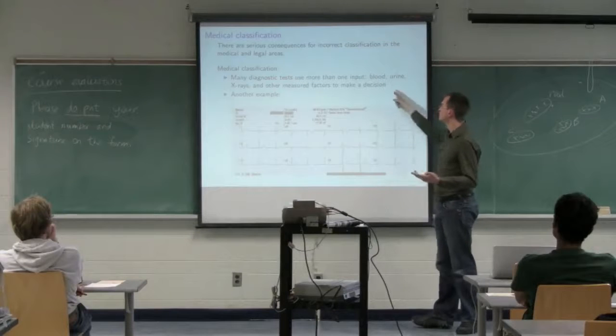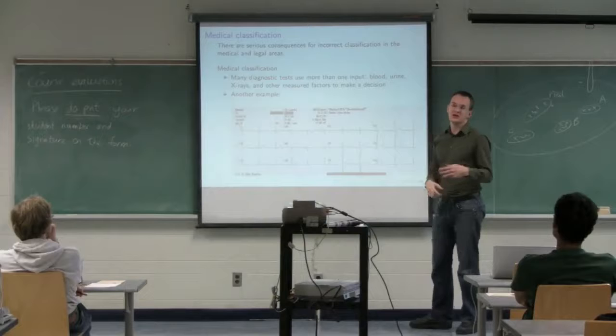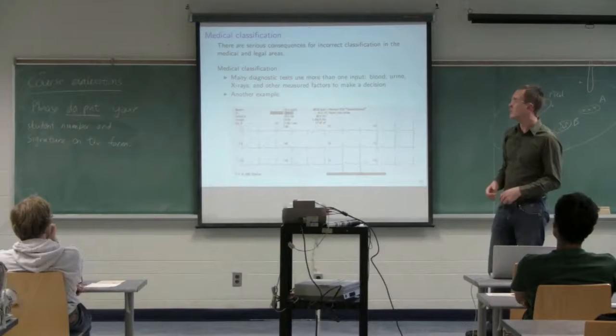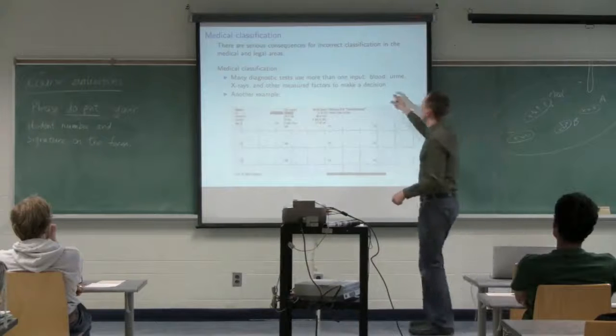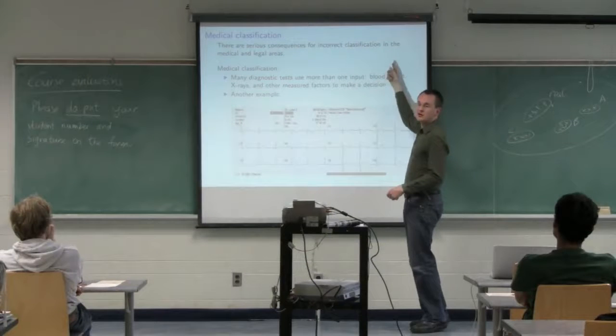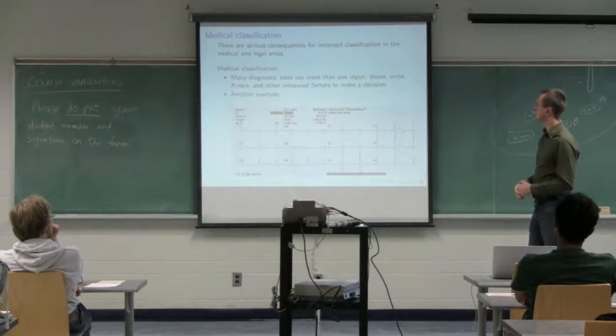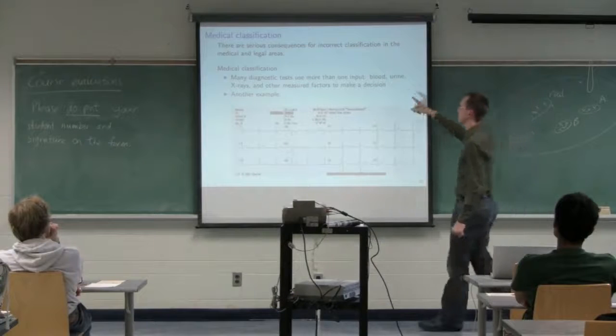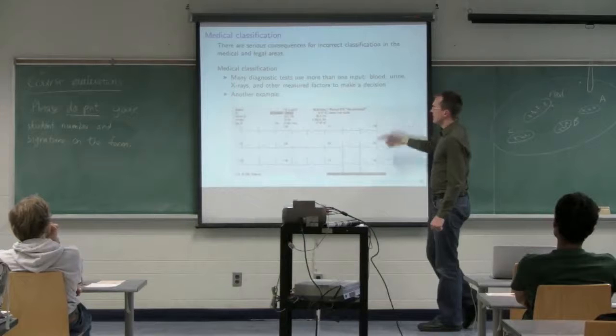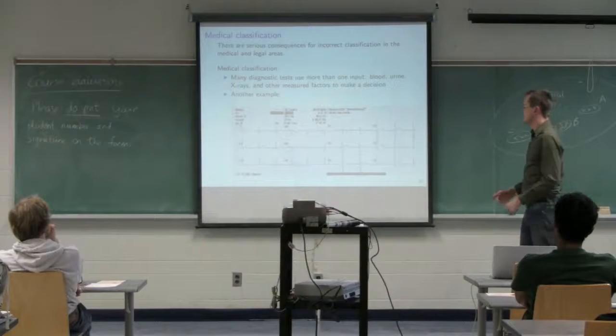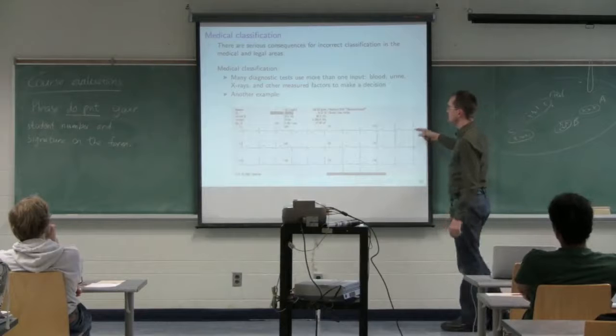If you've got more than one input, so let's say x1, x2, x3, x4, you're using those four inputs to make a decision. Does this patient have a particular type of cancer, yes or no? You don't want to mess up that decision. You want very low levels of misclassification in those situations.